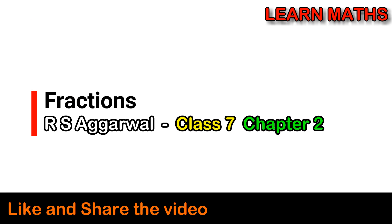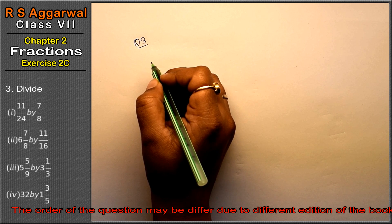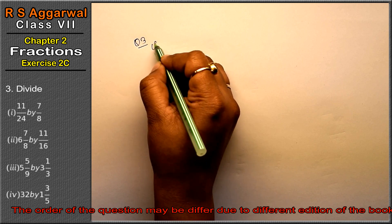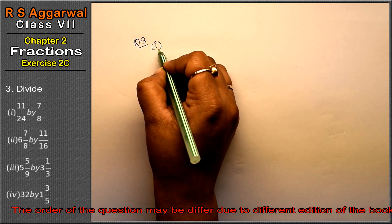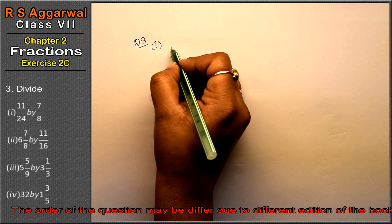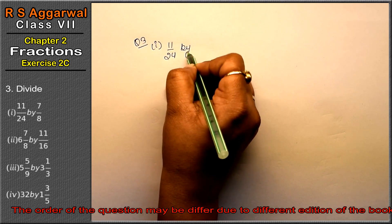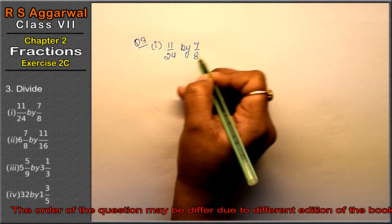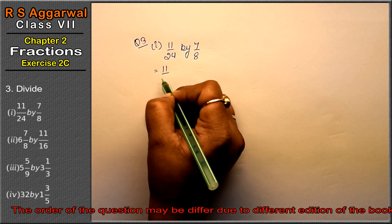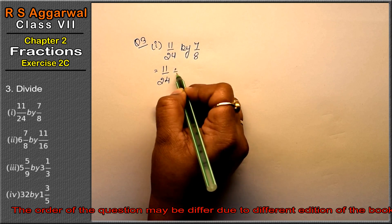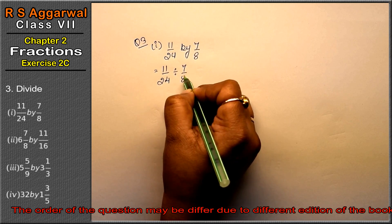Let's do question number third of exercise 2C, that is fractions. Question number third is divide. We have to divide the first part: 11/24 divided by 7/8. Friends, this means 11/24 divided by 7/8.